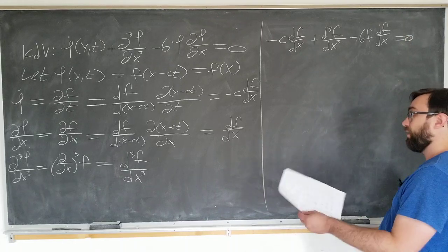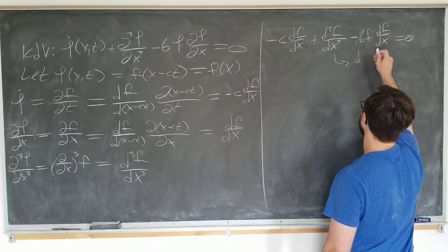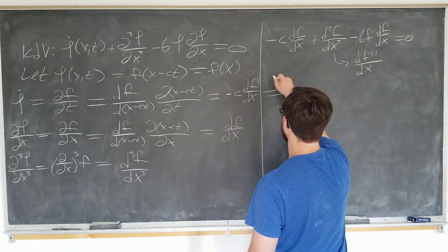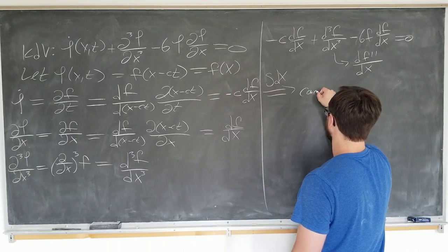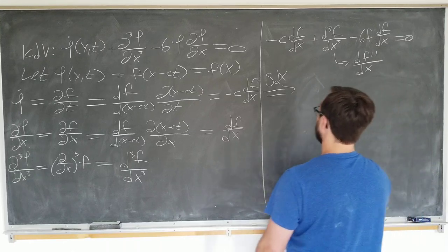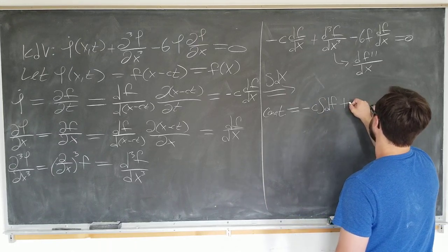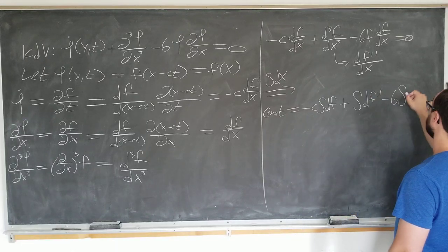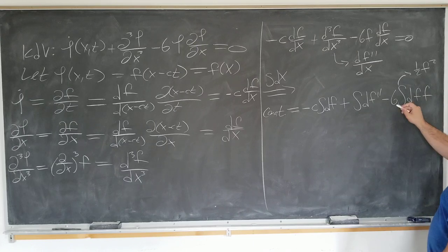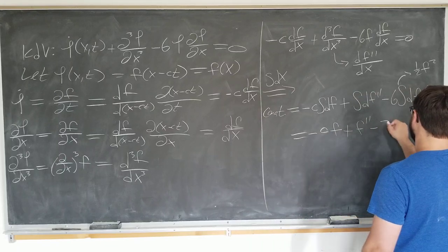And now we notice that actually all the terms have a derivative, so we can go ahead and integrate. We want to switch to the prime notation briefly. So if we integrate with respect to x, this tells us that some constant is equal to minus c integral df plus integral of df double prime minus 6 integral df f, which we recognize using the power rule is just simply 1 half f squared and 6 over 2 is 3. So we have some constant is minus cf plus f double prime minus 3f squared.